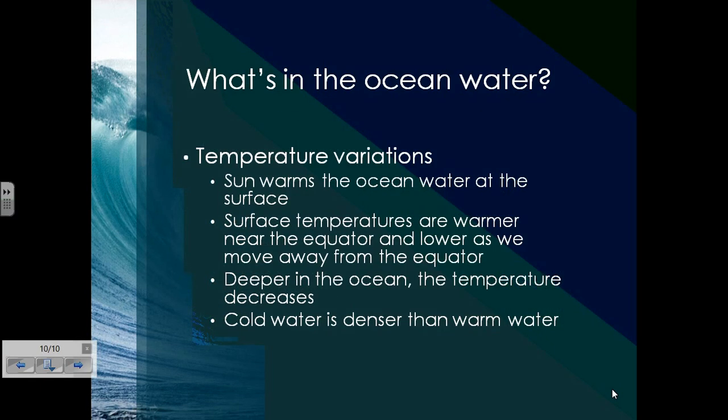There are also temperature variations in the ocean. The sun warms the ocean water at the surface, and surface temperatures are warmer near the equator and lower as we move away from the equator. Deeper in the ocean, temperature tends to decrease, and cold water is denser than warm water. That completes our presentation on the oceans.